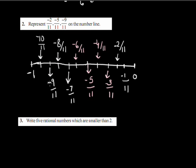So I have divided the region between 0 and -1 into 11 equal parts by drawing 10 lines. The points we need are -2/11, -5/11, and -9/11, which are the second, fifth, and ninth division points respectively.